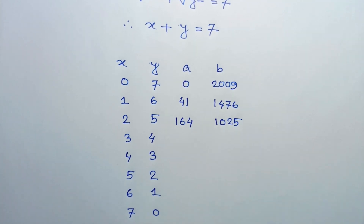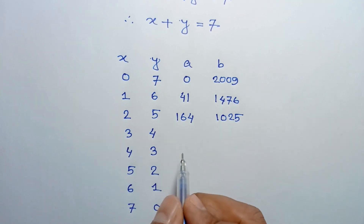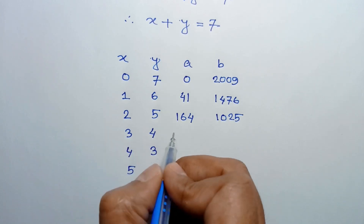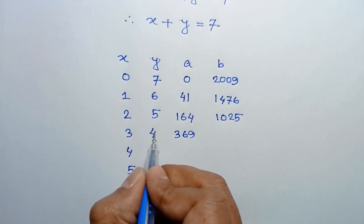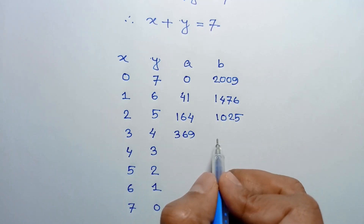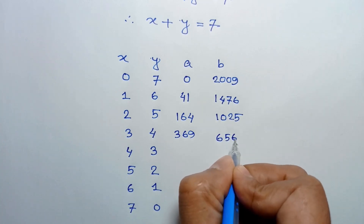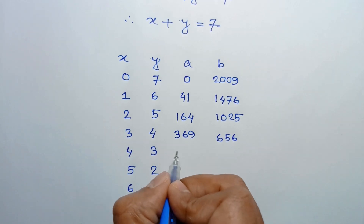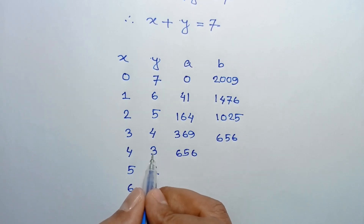Continuing: when x equals 3, a equals 41 times 3 squared equals 369, and when y equals 4, b equals 41 times 4 squared equals 656.